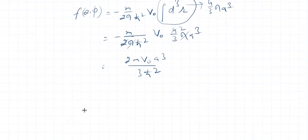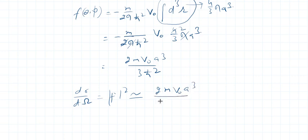As we have learned in the beginning, so it is (2m V₀ a³ / 3ℏ²)². Now I can calculate total cross section. Total cross section is integral of |f|² dΩ.